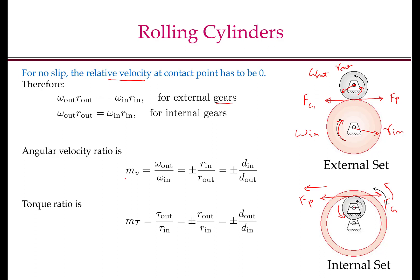Therefore, the angular velocity ratio MV, defined as the output angular velocity divided by the input angular velocity, is ±R_in/R_out, or equivalently ±D_in/D_out. This is the fundamental formula to remember for this class. The negative sign applies to external gears and the positive sign applies to internal gears.